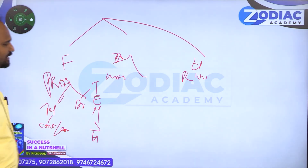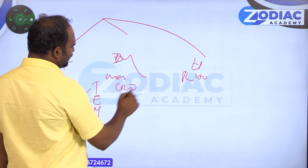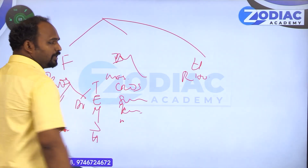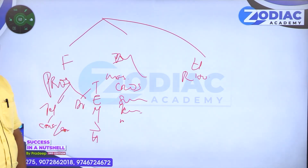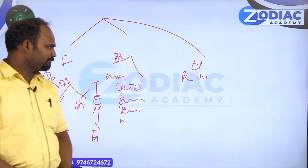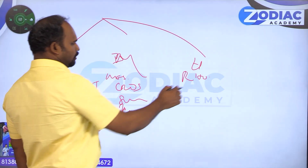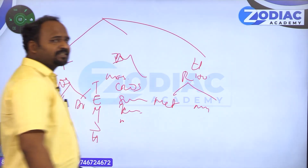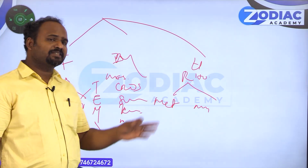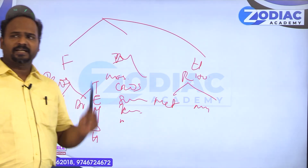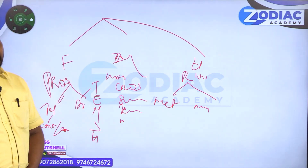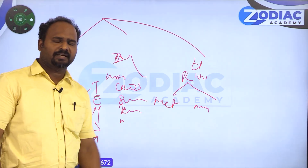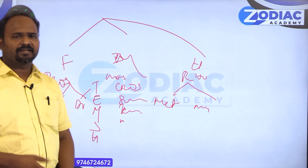The midbrain (mesencephalon) has four parts: crus cerebrae, substantia nigra, tegmentum, and tectum. The hindbrain (rhombencephalon) is divided into metencephalon and myelencephalon. Metencephalon has pons and cerebellum, and myelencephalon has medulla oblongata. Further details of the central nervous system, parts of the brain, and various peripheral nerves will be covered in other topics.